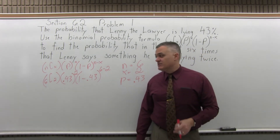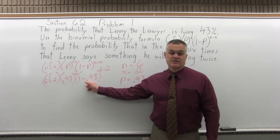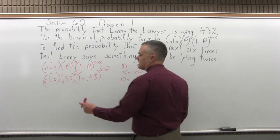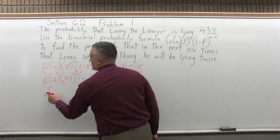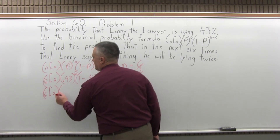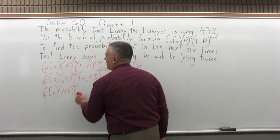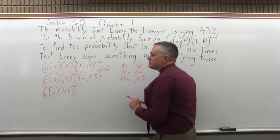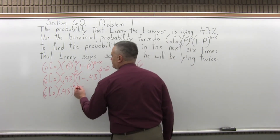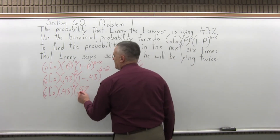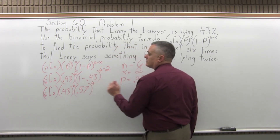Before I do any serious computation, I can clean up the right-hand set of parentheses a little bit — just do those subtractions. So I'll have 6 combination 2 for the first part, 0.43 to the 2 for the middle one. But in the last parentheses, 1 minus 0.43 is 0.57, and the exponent 6 minus 2 will be 4.